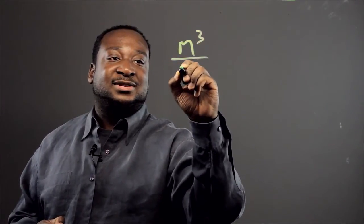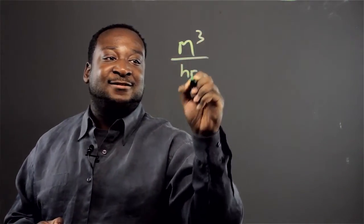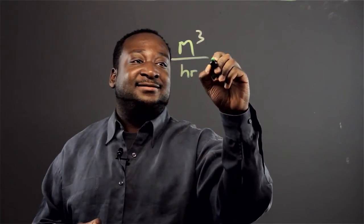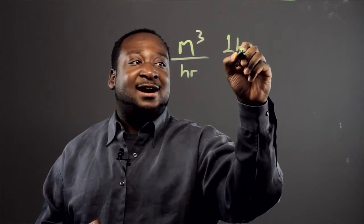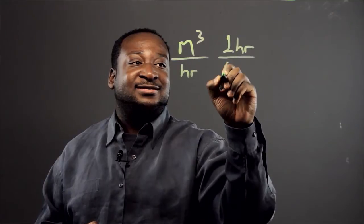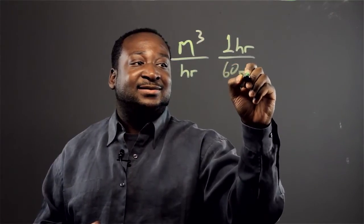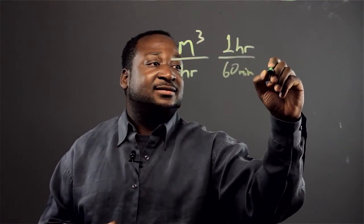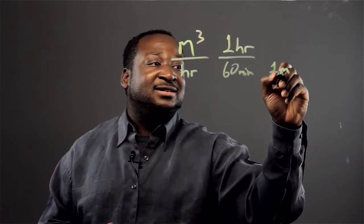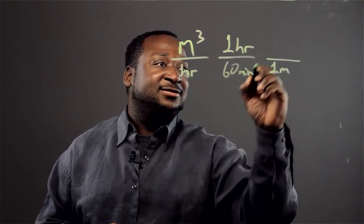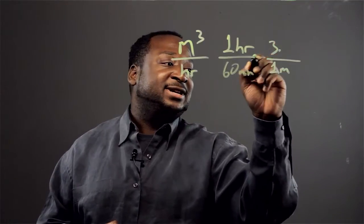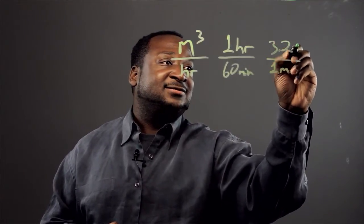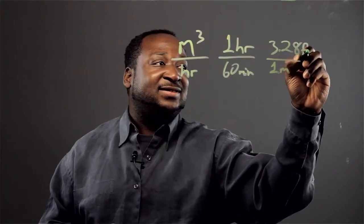Okay, let's say we have our meters cubed per hour. Now we know that one hour is equivalent to 60 minutes, and we know that one meter is equivalent to 3.28 feet.